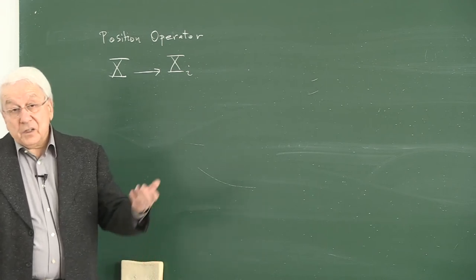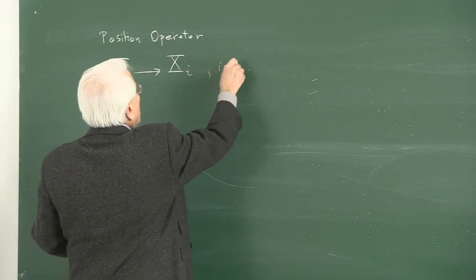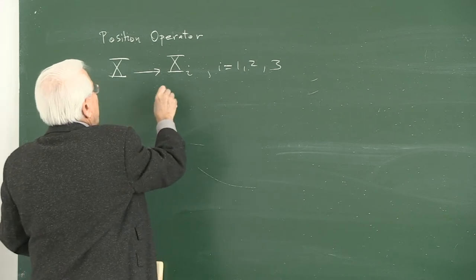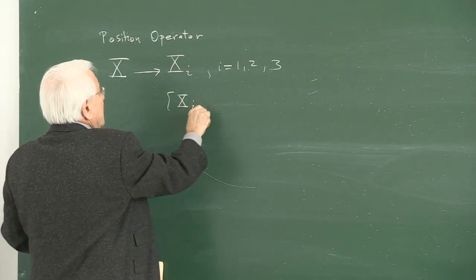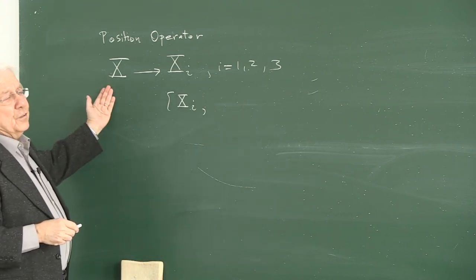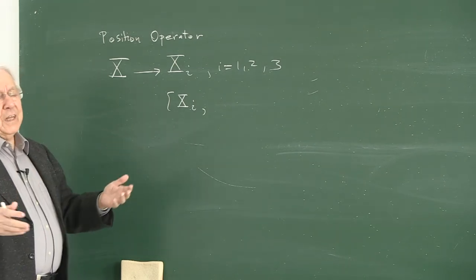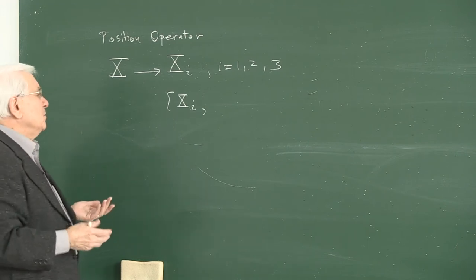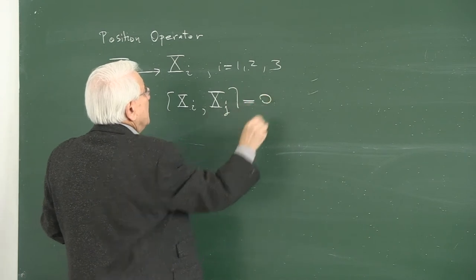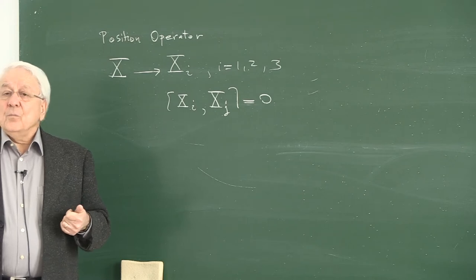Of course you could think of generalizing to any arbitrary dimension — i = 1, 2, 3. Based on completeness, not only for one-dimensional operator eigenvectors but also three-dimensional ones, you can express everything in terms of those basis vectors, implying that these are commuting or compatible operators.